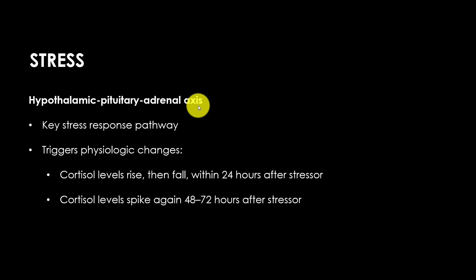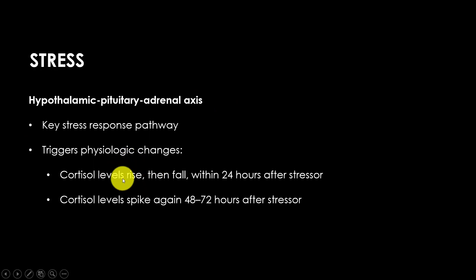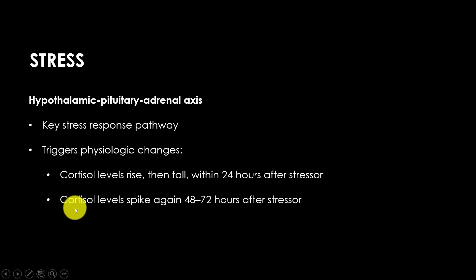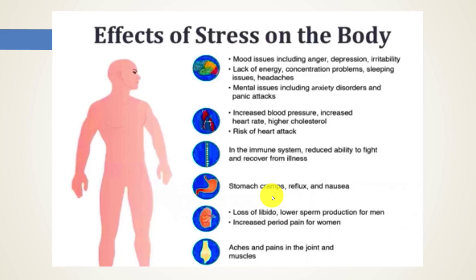Cortisol is the most important factor in stress. When we are stressed, the cortisol levels in our blood are going to rise. However, they tend to fall within 24 hours after the cessation of the stressor. We also know that cortisol levels spike again 48 to 72 hours after the stressor. Stress is not only correlated with mental illness but it affects numerous parts of our body. For example, when individuals are stressed they experience mood changes such as anger, depression, and irritability.